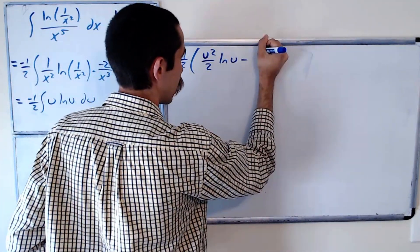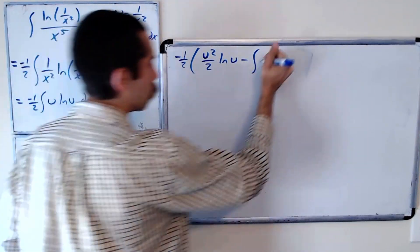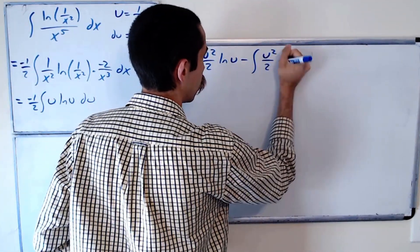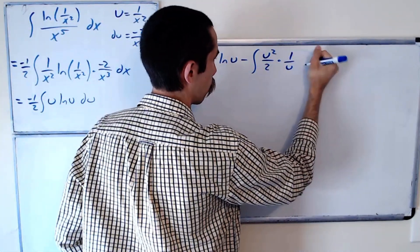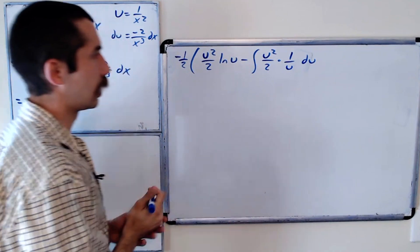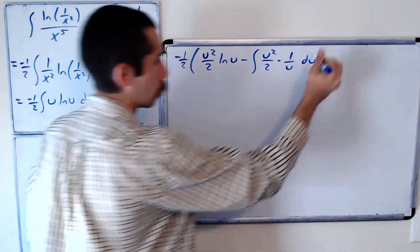minus the integral. So again, u squared over 2 times the derivative of ln of u, which is 1 over u, du. Okay, and close the parentheses.